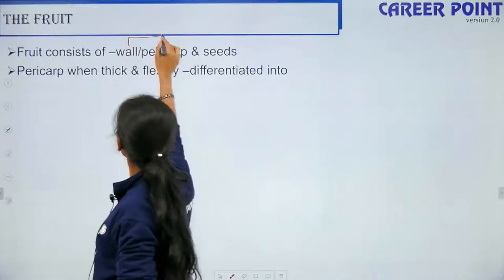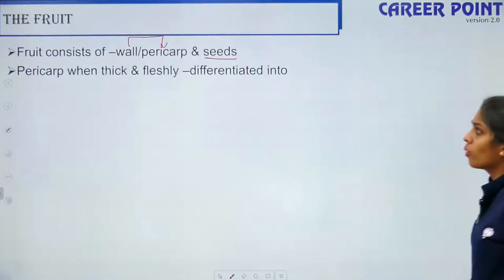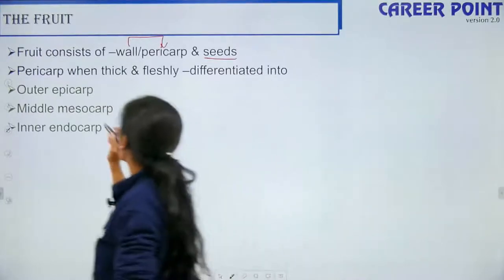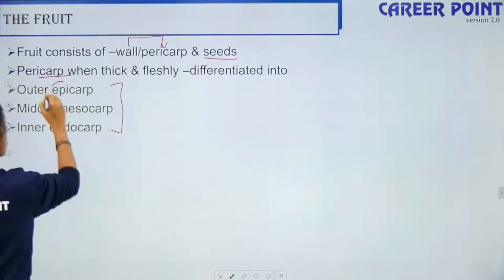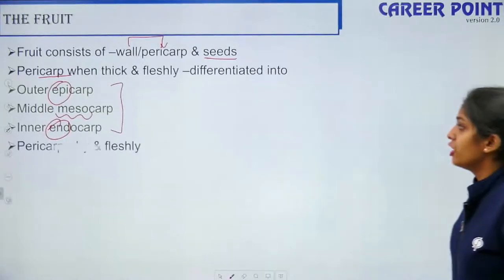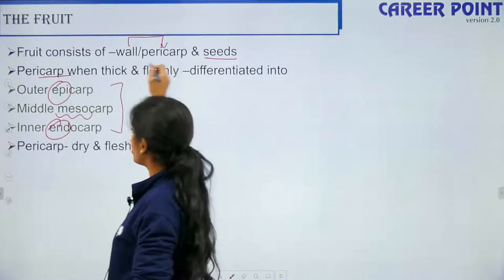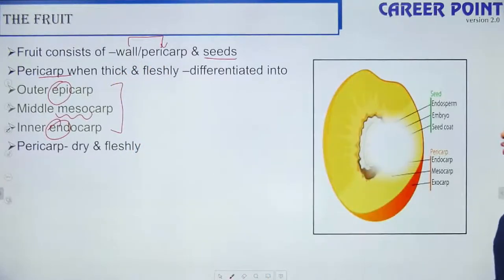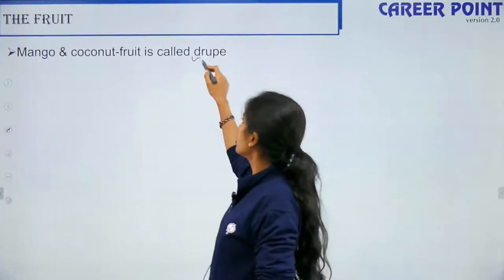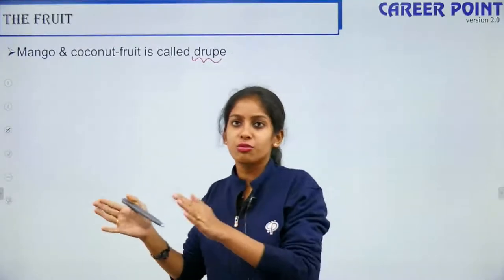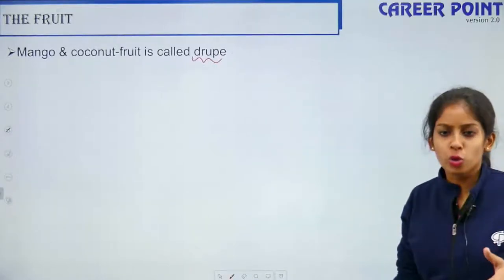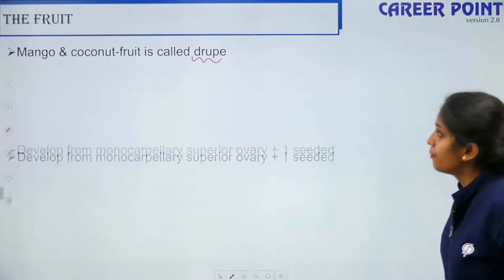The pericarp, when thick and fleshy, is differentiated into outer epicarp, middle mesocarp, and inner endocarp. Mango and coconut are examples of drupe fruit — single-seeded fruits developing from monocarpellary superior ovary. In mango, the edible part is the mesocarp; the hard endocarp is around the seed. In coconut, the fibrous brownish part is the mesocarp.